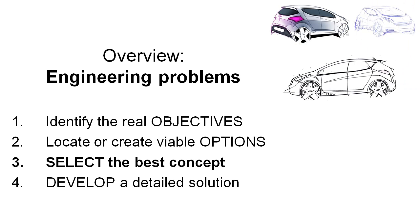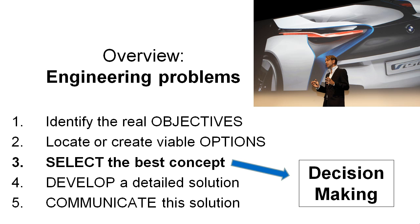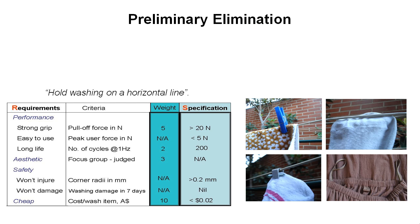So we're talking decision-making. In future videos we're going to look at how you develop a detailed solution and also go about communicating this solution to your chosen audience. Using the example of holding and washing on a horizontal line — the one we've been working with — I want to explain to you how you go about preliminarily eliminating some of the options that you have in your solution space.